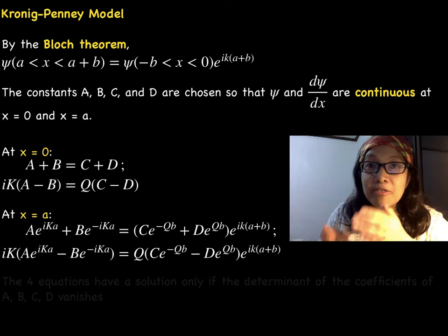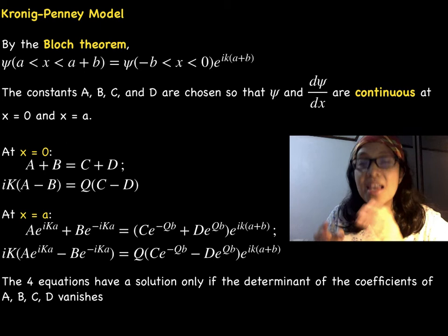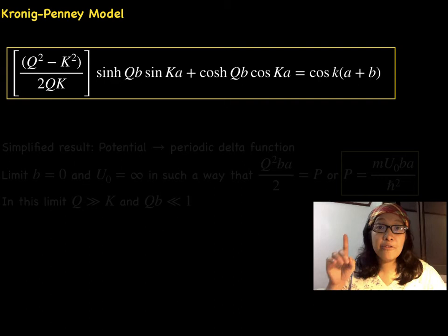Four equations are obtained. These four equations have a solution only if the determinant of the coefficients of A, B, C, and D is zero.